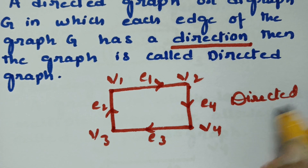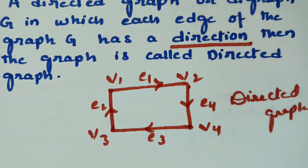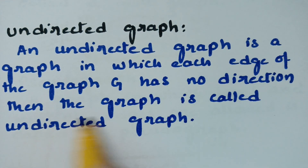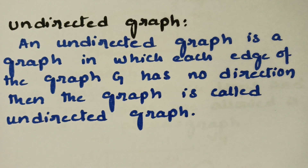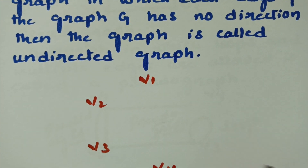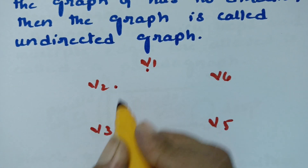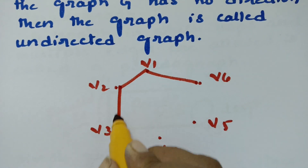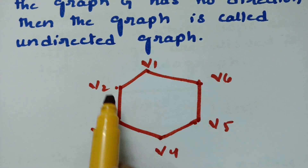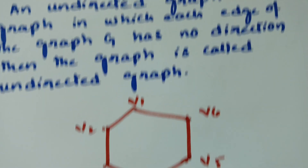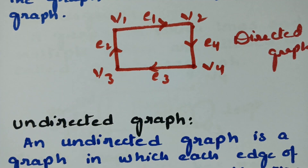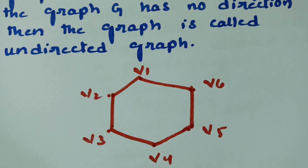An undirected graph is a graph in which each edge has no direction. For example, vertices V1, V2, V3, V4, V5, V6 are connected by edges with no direction assigned. We can consider the edge between V1 and V2 as going either way. Since there is no direction to any of the edges, this is an undirected graph.